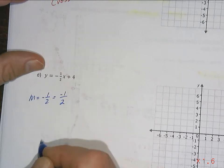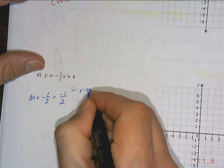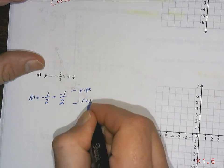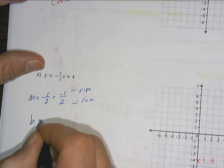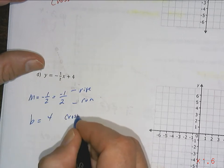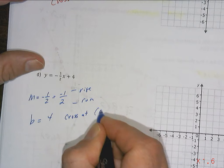I'm going to make that negative one over two because that makes it really easy for me to see a rise, makes it really easy for me to see a run. My b value is four, so that means that it's going to cross at 0,4.